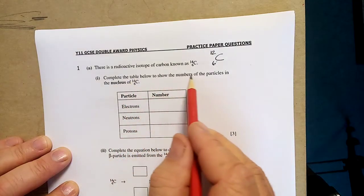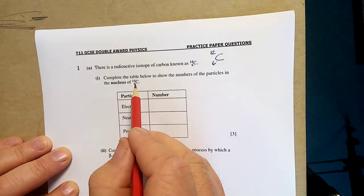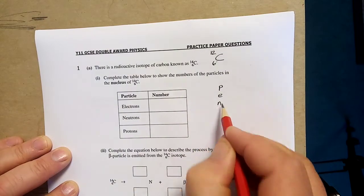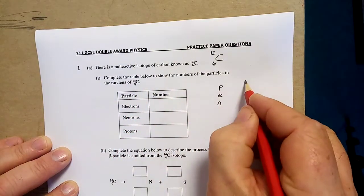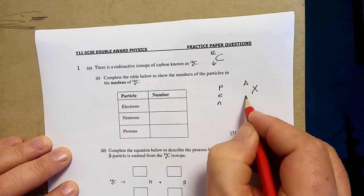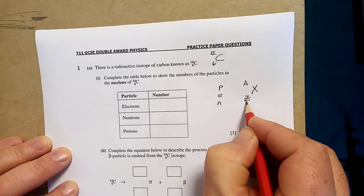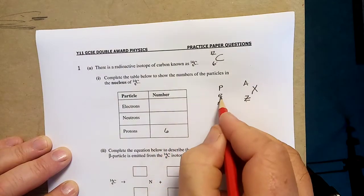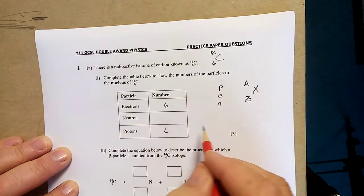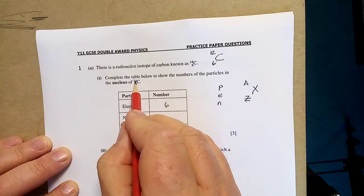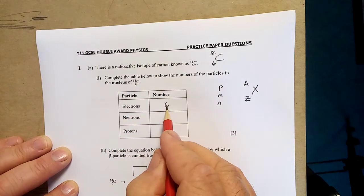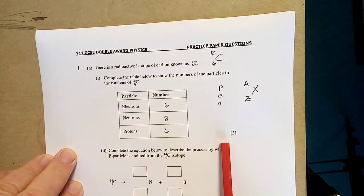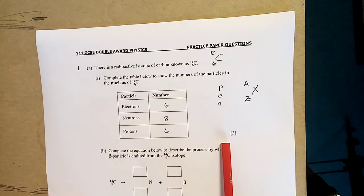Complete the table below to show the number of particles in the nucleus. Now this is, remember, PEN - protons, electrons, neutrons. And also remember, the atomic number tells me the number of protons. Six. There must be six electrons. And there's fourteen nucleons, of which there's six protons, so there must be eight neutrons. Three marks for that. Fair enough.